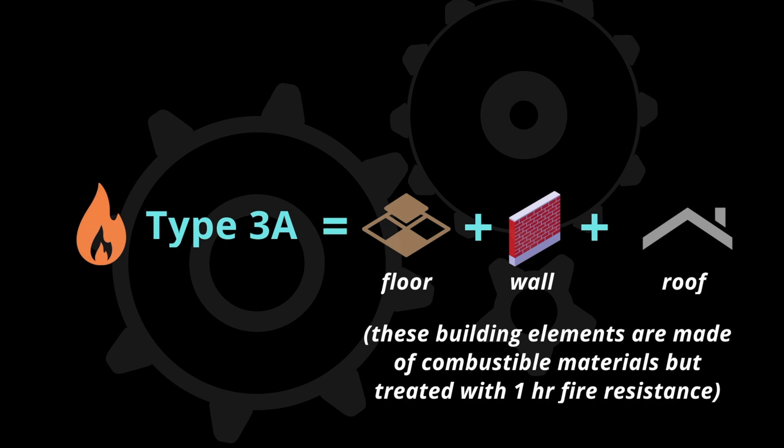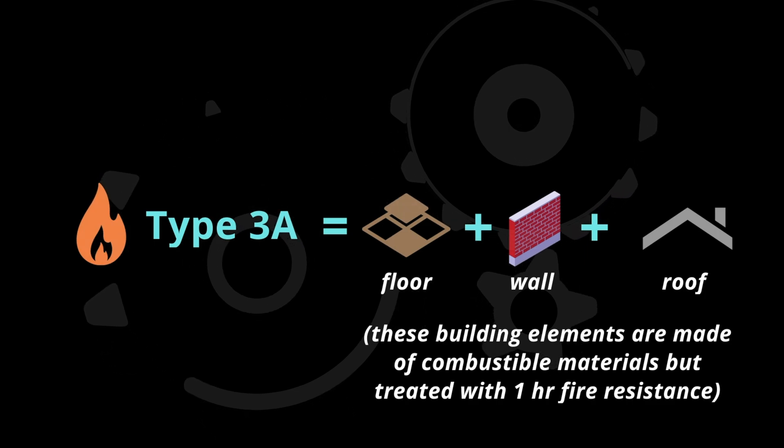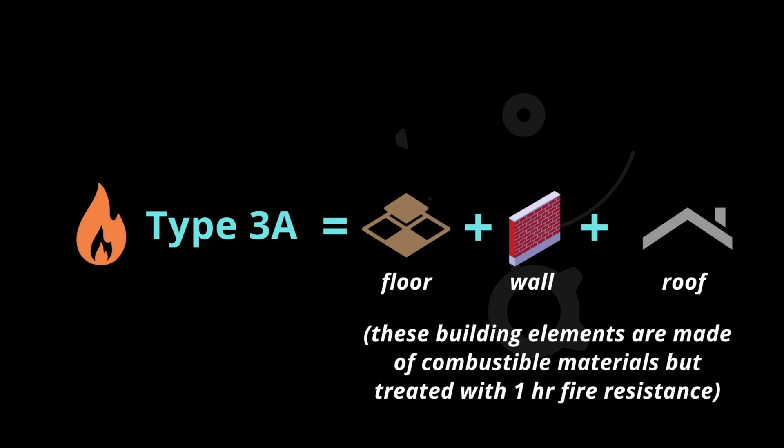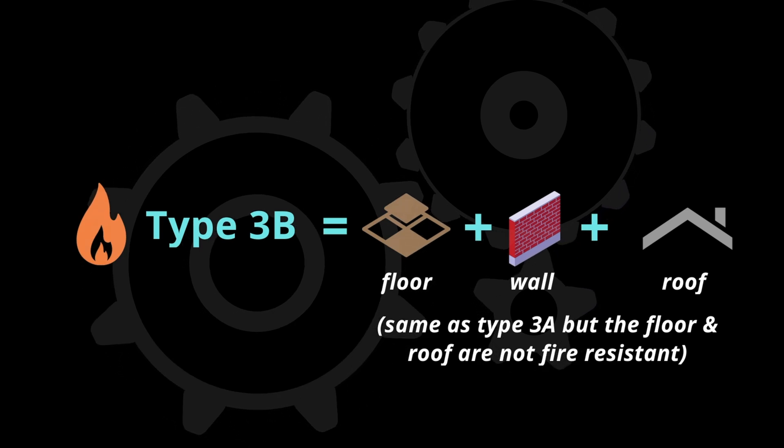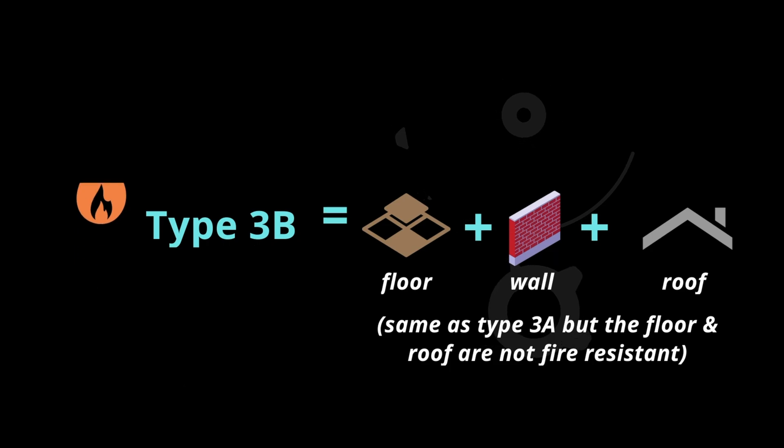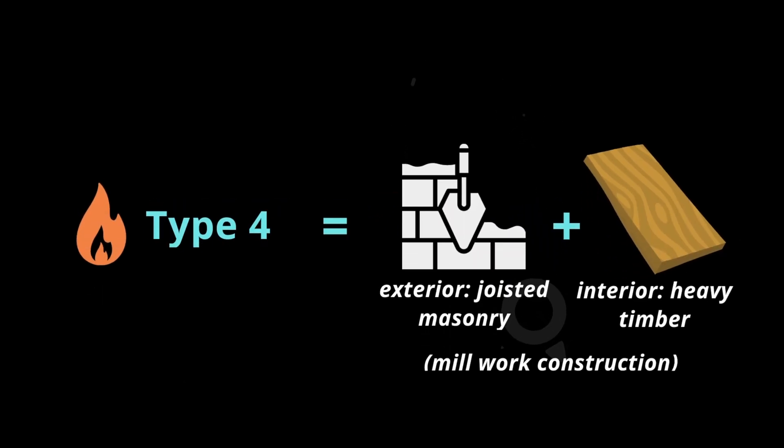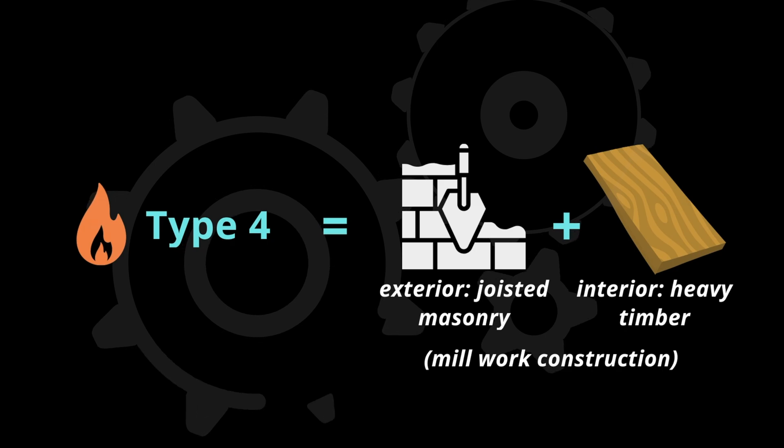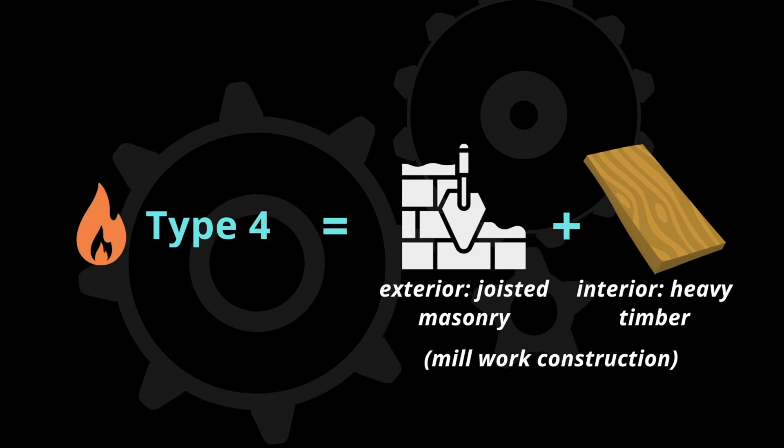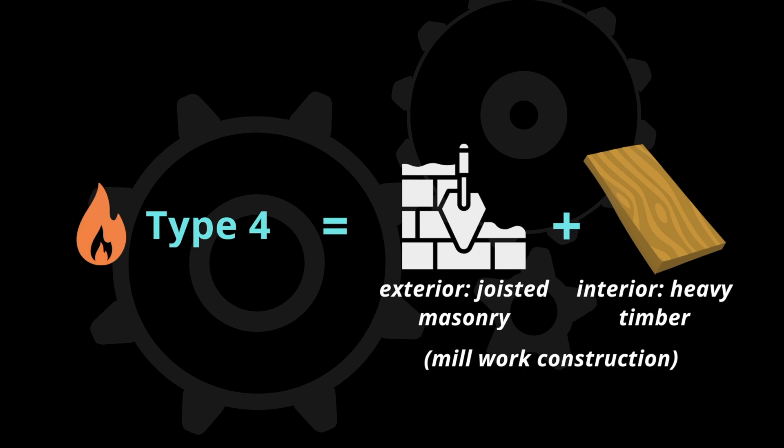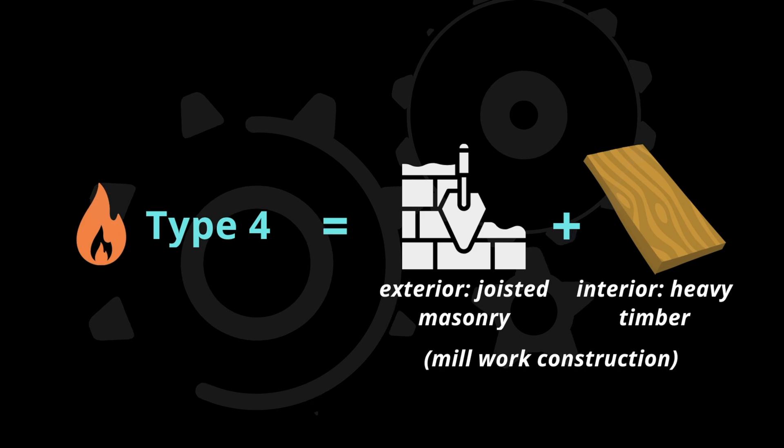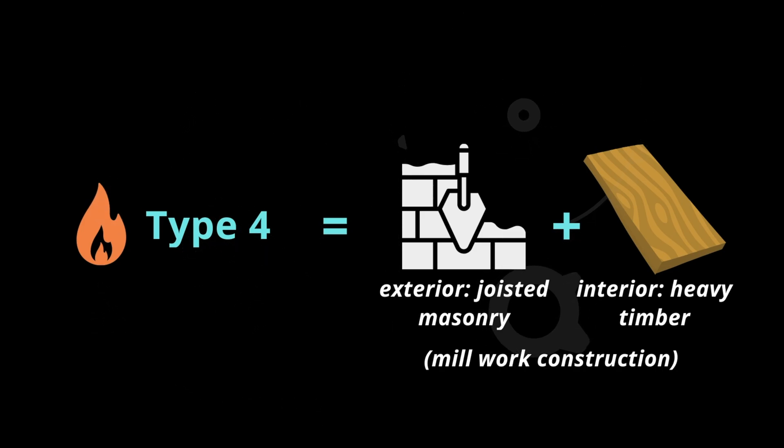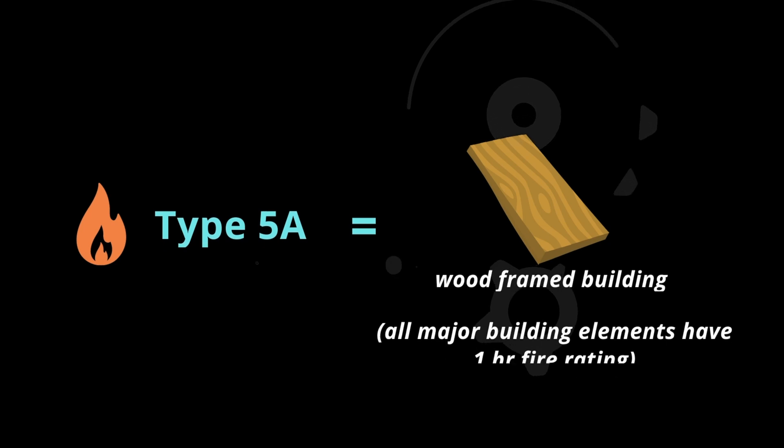This means that these building elements can prevent fire from spreading to adjacent spaces for one hour. Type 3B is almost the same as Type 3A, except that the floors and roofs don't have a fire rating. From Type 4 construction onwards, this is where wood materials come into play. The exterior walls are made of joisted masonry, while the interior is made of heavy timber. Type 4 can be called millwork construction.